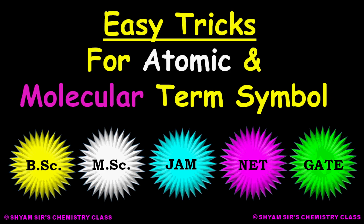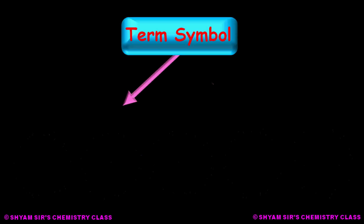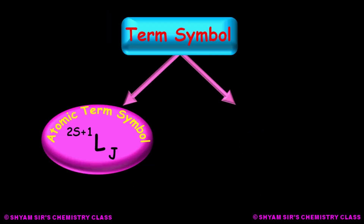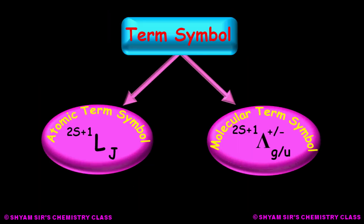Term symbols are generally of two types. One is atomic term symbol for atoms, and another one is molecular term symbol for molecules. Here, we will learn specially for diatomic molecules. Let us learn one by one.